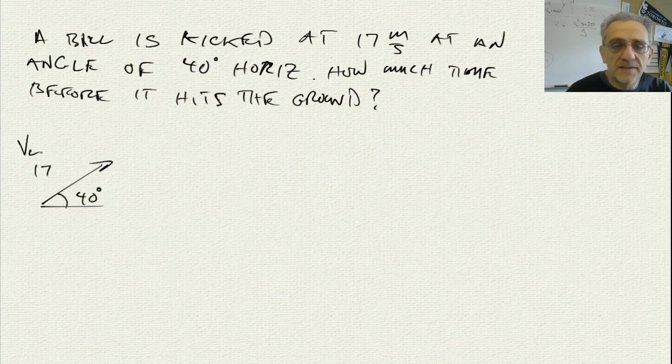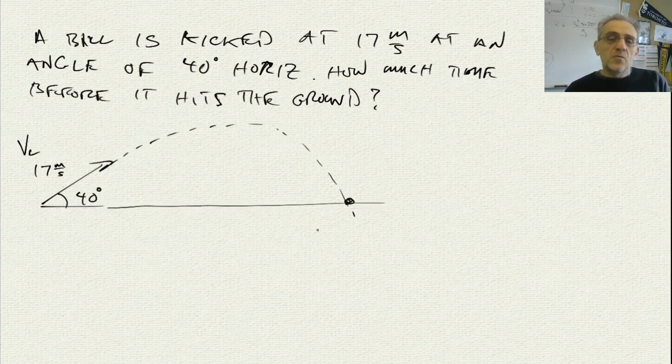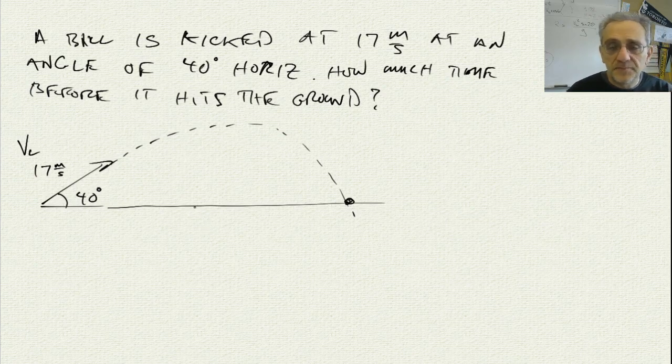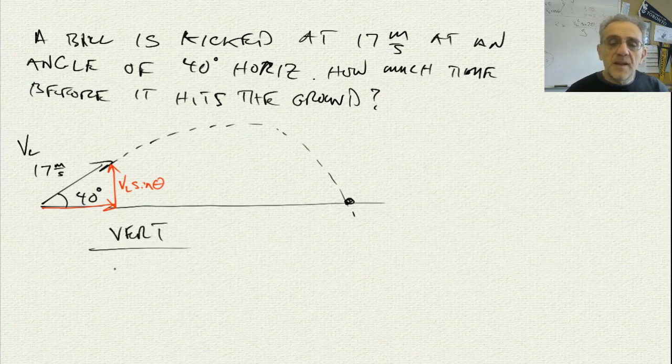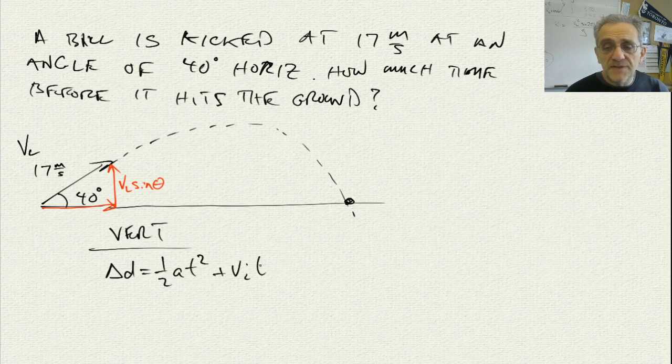And our launch velocity is 17 meters per second. And we're going to go like that. Essentially, we want to know how much time this thing spends in the air. So, let's break this guy up first into horizontal and, more importantly, vertical. The vertical component is what we're going to use to solve this. So, it's going to be VL sine theta. And let's actually go straight to the vertical solution. And the equation we're going to use is the one that has time in it with acceleration. And that is delta D equals 1 half AT squared plus VIT.